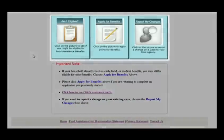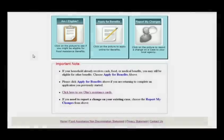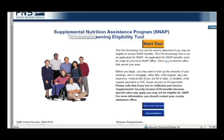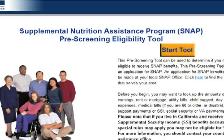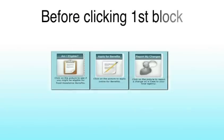The application itself starts with three options, as indicated by the three blocks. Clicking the first block, Am I Eligible?, will open a new window and take you to an online form that determines whether you are potentially eligible for the Supplemental Nutrition Assistance Program called SNAP.